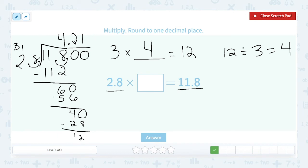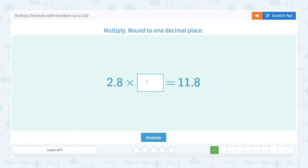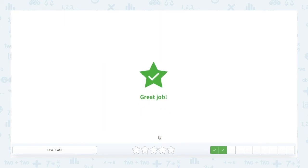Okay so I have 4.21. Well 1 is less than 4. So this rounds down to 4.2. Let's close our scratch pad and we'll put 4.2 in as our answer. And we got it right.